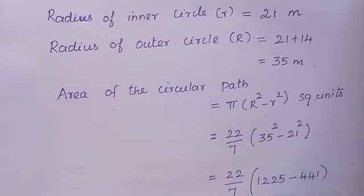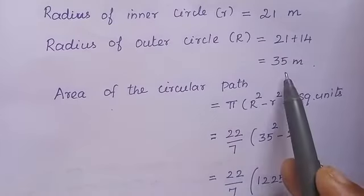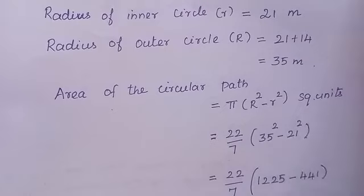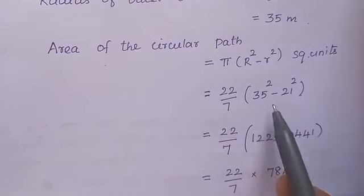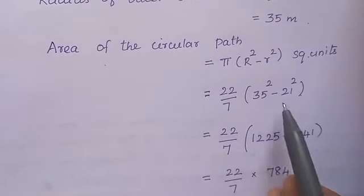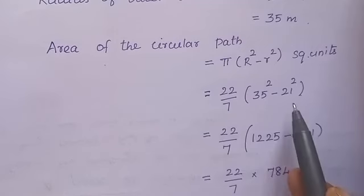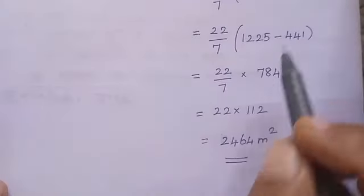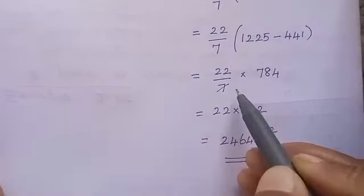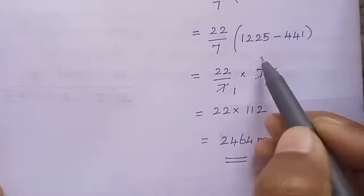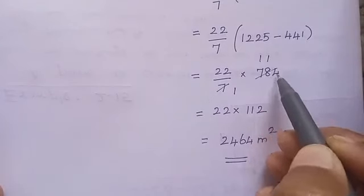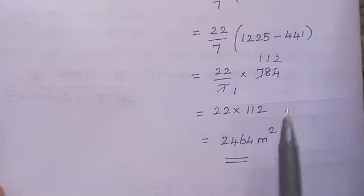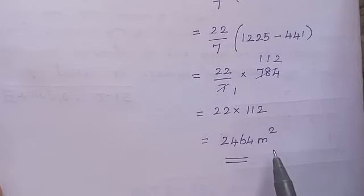Value of π is 22/7. Capital R is 35, so R² is 35² = 1225. Small r is 21, so r² is 21² = 441. Subtracting: 1225 minus 441 equals 784. Cancel 784 by 7: 784 ÷ 7 gives 112. Then multiply 22 by 112 to get 2464 meter square. This is the area of the circular path.